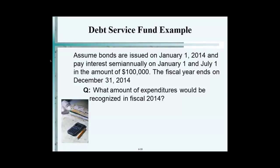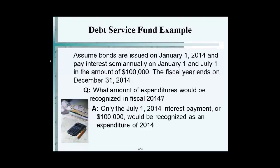Only the first one, which is what? A hundred. We only missed by one day, because the next one would be when? Would be January 1st. We missed it by one day. You mean for one day we don't have to accrue? Yes.